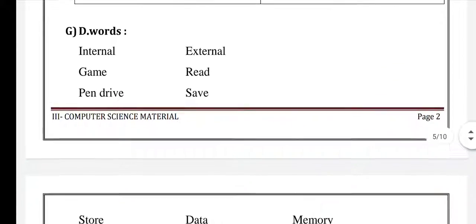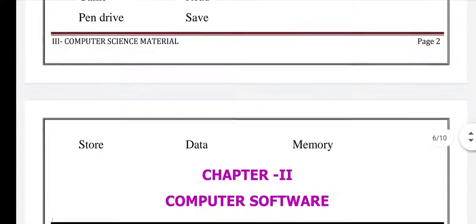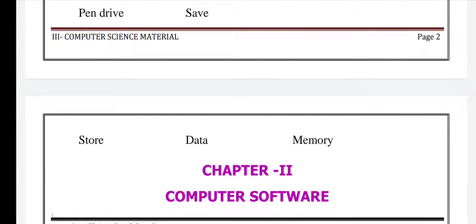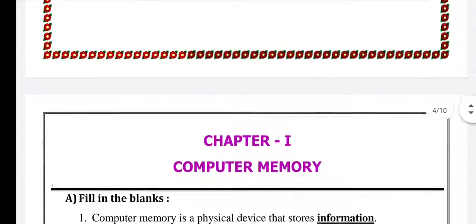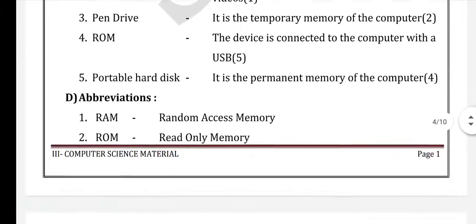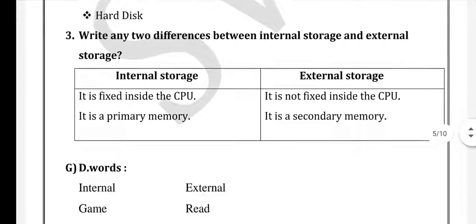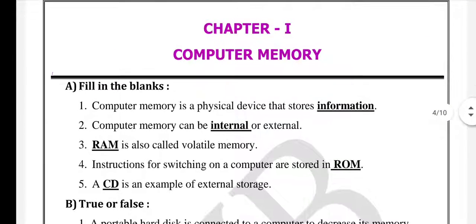D words: internal, external, game, read, pen drive, store, data, memory — nine D words in total. That completes Chapter One: Computer Memory, covering 1 mark, 2 mark, fill in the blanks, true or false, match the following, abbreviations, circle the odd one out, question and answer, and D words. You can learn and read this for the next class. Thank you.